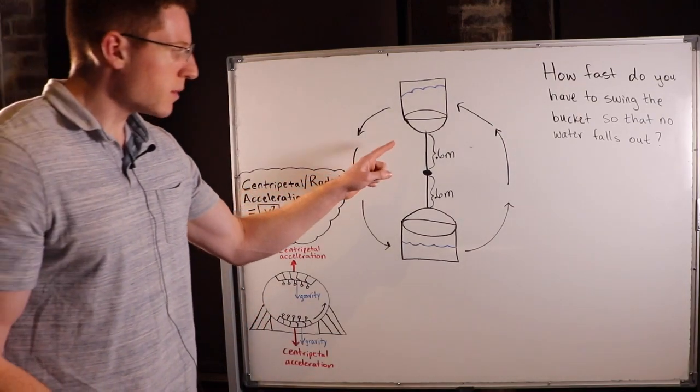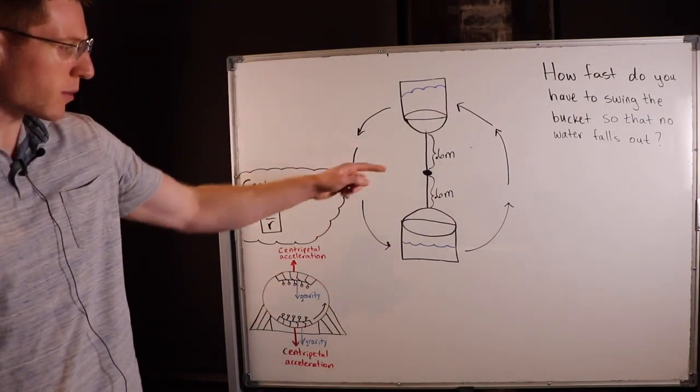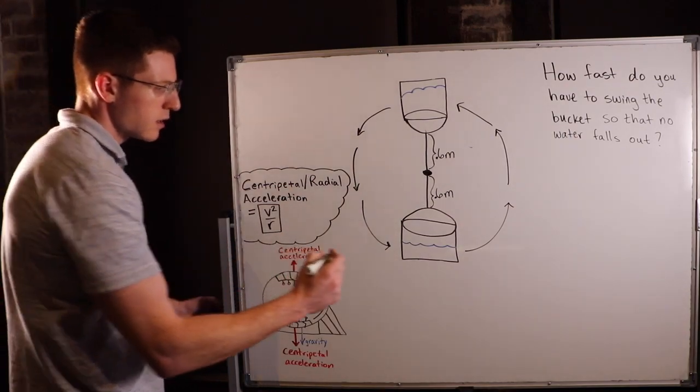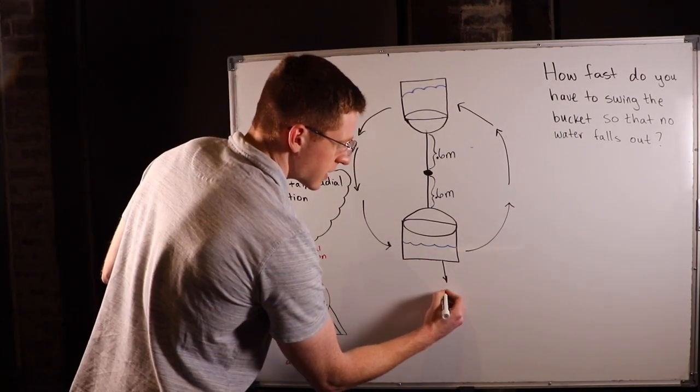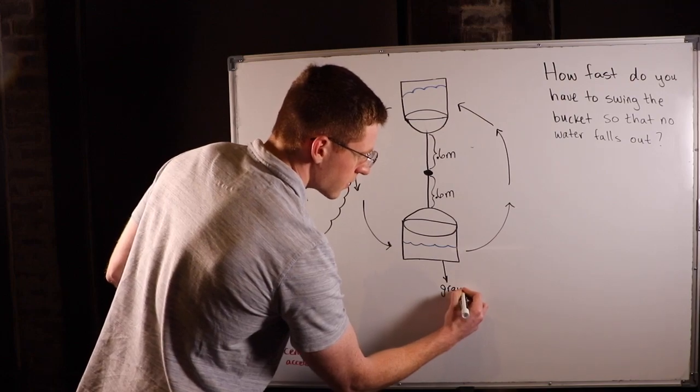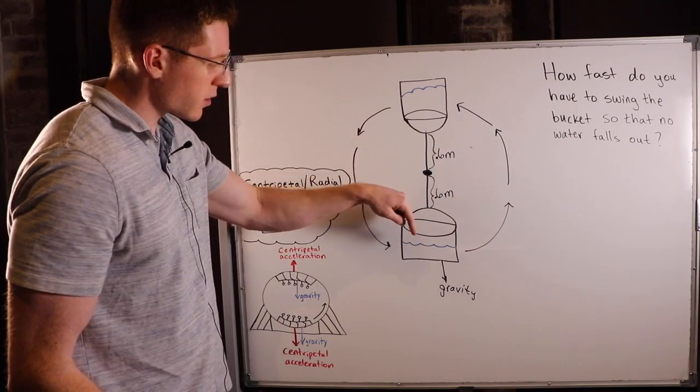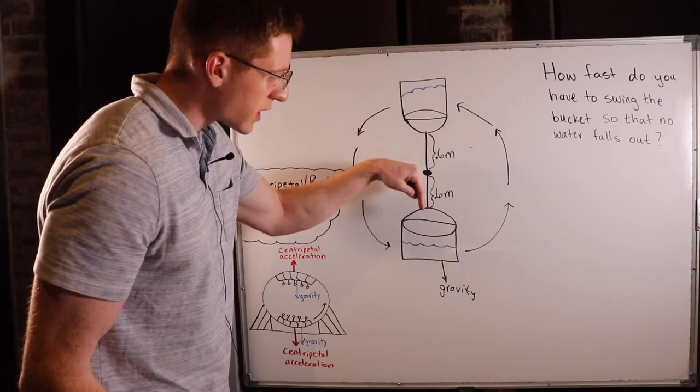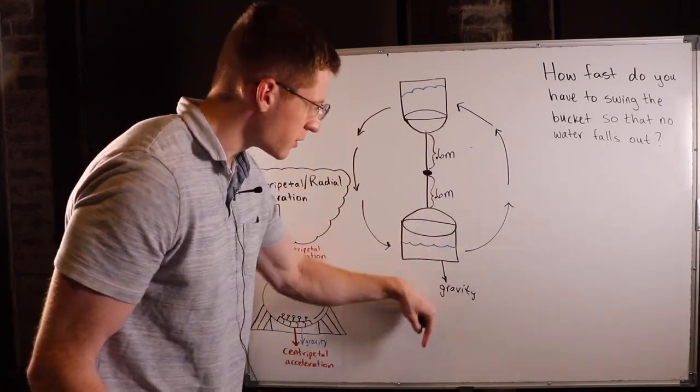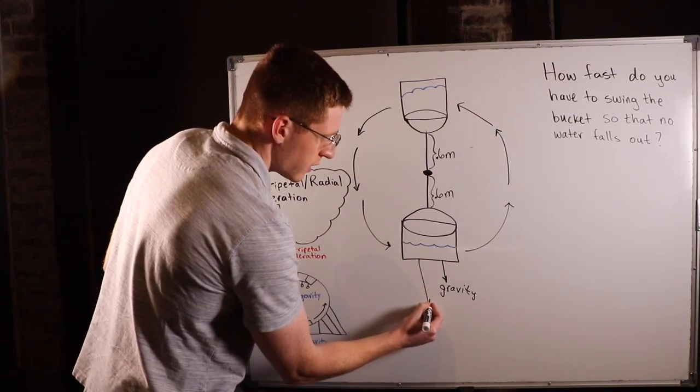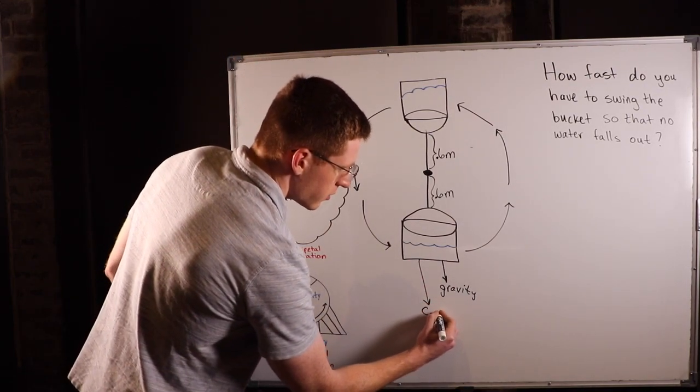The same principles are going to hold true in this problem. At the bottom here, gravity is always going to be acting straight down. And since we're moving in a circle, centripetal acceleration is also going to be acting straight down, since it acts straight out of a circle. I'll abbreviate centripetal acceleration with CA.